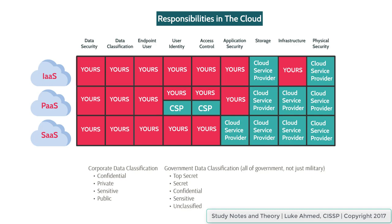There are 9 categories of security concerns in the cloud when a tenant is occupying or renting from a cloud service provider.